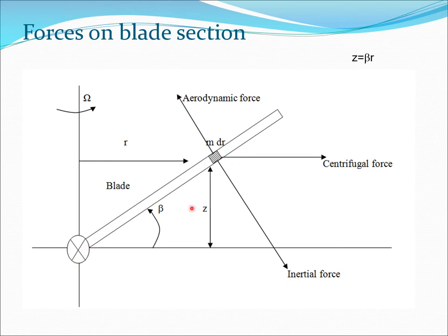Here you have this blade rotating around the hub, and we are considering a very small mass element. If the mass per unit length of the blade is m, then the mass of this section is m·dr, where dr is a small length. R is the distance to this point, z is the out-of-plane distance, and beta is the flap angle — the blade moves in this direction, and that is the flapping motion.